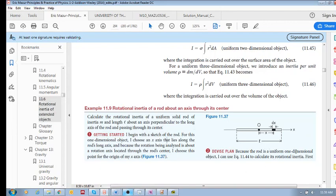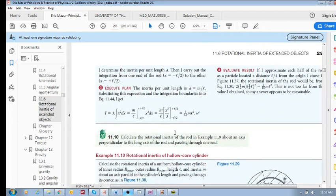So because the rod is a uniform one-dimensional object, I can choose equation 1144. So the first thing we need is lambda. What is lambda? Lambda is M over L. It's the same as dm over dx. So the inertia per unit length is the mass divided by the total length, M over L.